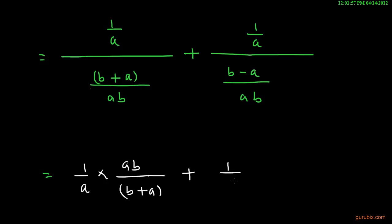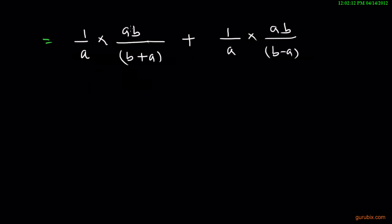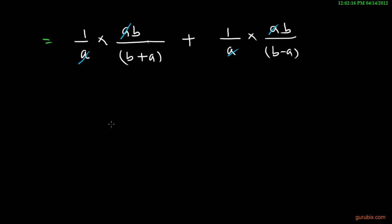Here it will be 1 over a into ab over b minus a. Now we can cancel out a with a, and here a with a. If we take LCM of b plus a and b minus a.